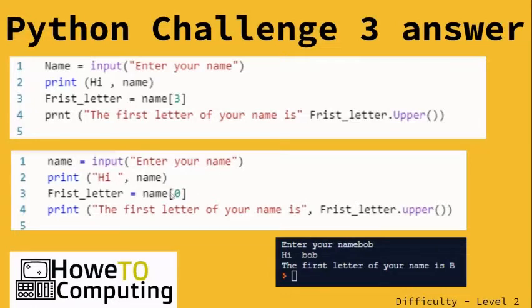It should be element zero, not element three when we're indexing to get the first letter. You can see here it's B at the wrong index. Using element three would have caused an error here.